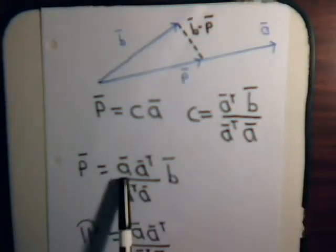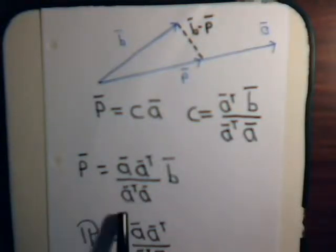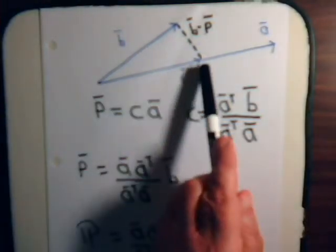And we explained that this, even though this is just a number, it's the magnitude of vector A, this is a matrix. We showed that in the last video. In fact, it's a symmetrical matrix. And this is what vector B is multiplied by to get the projection vector P. So this is the projection matrix. And again, this is what we derived and talked about in some detail in the previous video. Now, in this video, we want to use a specific example.